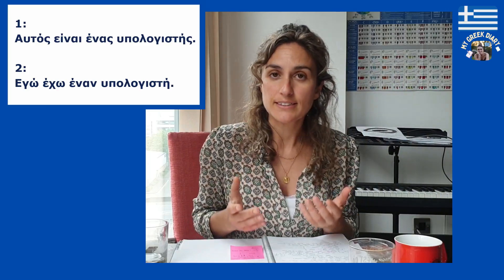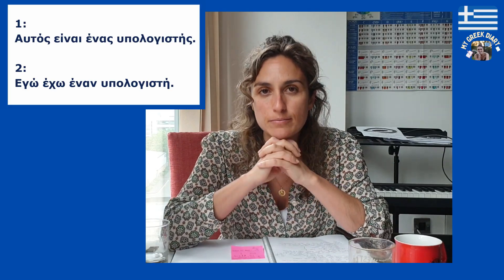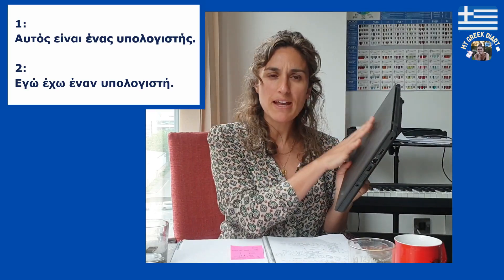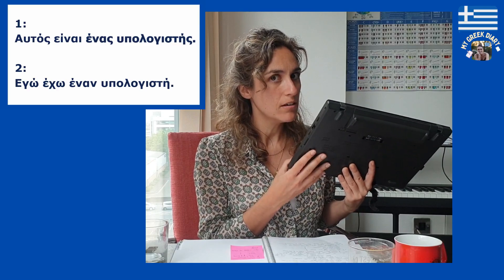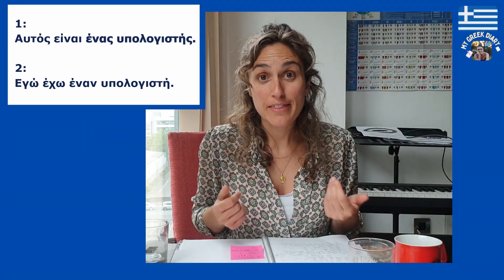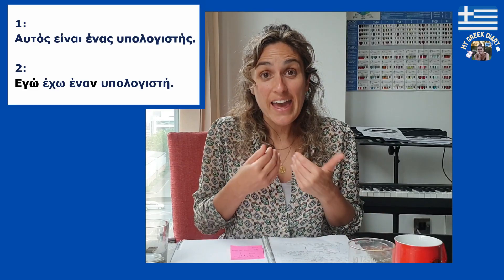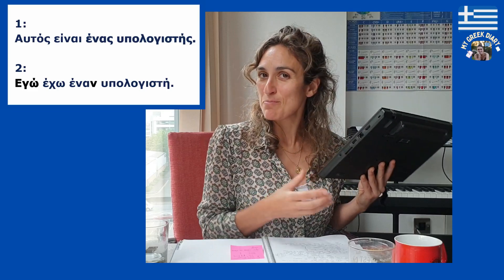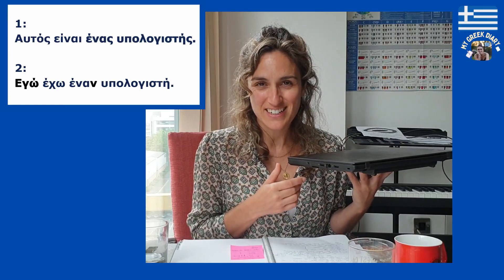In the first sentence, who is the subject? What is the main subject? Yes, the main subject is ένας υπολογιστής — that's the main focus of that sentence. However, in 'εγώ έχω έναν υπολογιστή', who is the main subject? Think about it. The main subject is 'I'. I have a computer. Εγώ is the main subject. Υπολογιστή is a direct object — it's not the main subject in this sentence.